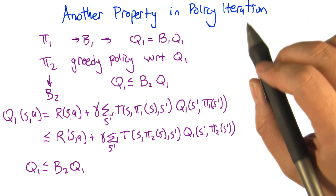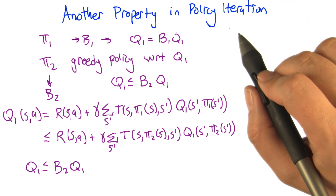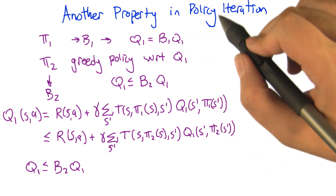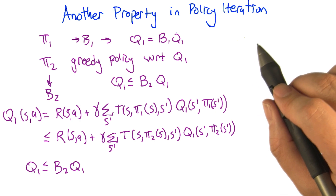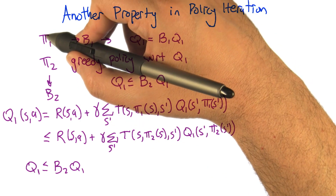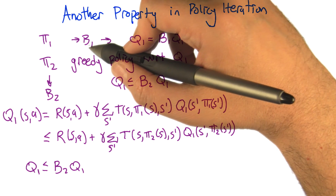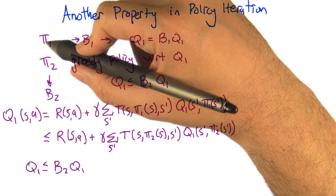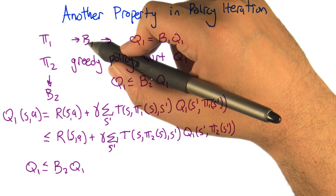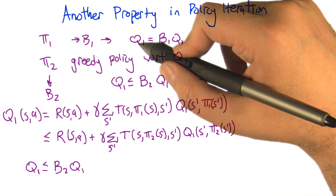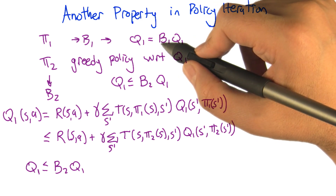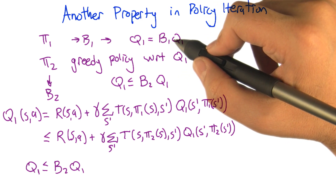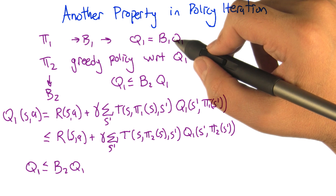We're going to need one more interesting property of this operator B1, but this one is specific to the context of policy iteration. Imagine we've got some policy Pi1, and associated with Pi1 is the operator B1. Q1 is the fixed point of B1 — it has a unique fixed point because of the contraction property of B1, which was proved earlier.